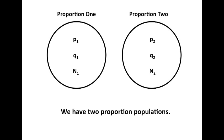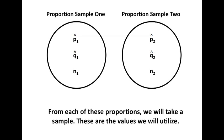In these proportions, as with sample means and other things we've done, we generally don't know about the population, so we take a sample. In proportion sample one, we have P hat one, Q hat one, and N one: probability of success in sample one, failure in sample one, and the number in sample one. Remember, if P hat one is 70%, Q hat one is one minus P hat one, or 30%. And the same holds true for our second proportion sample: P hat two, Q hat two, and N two.